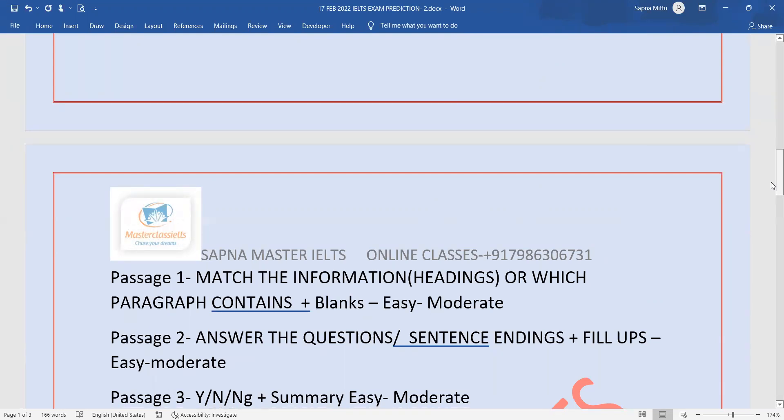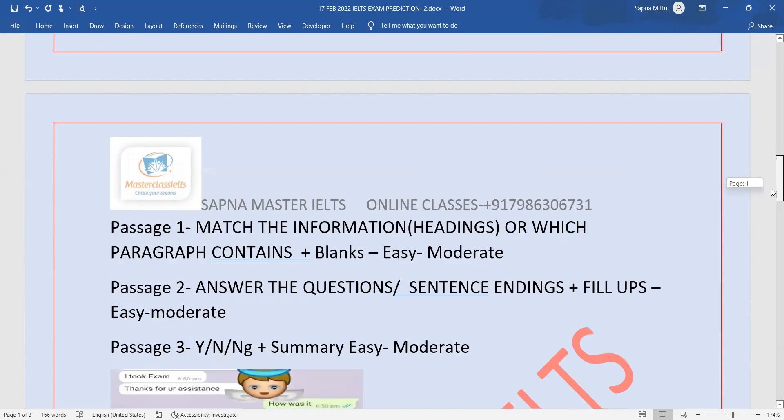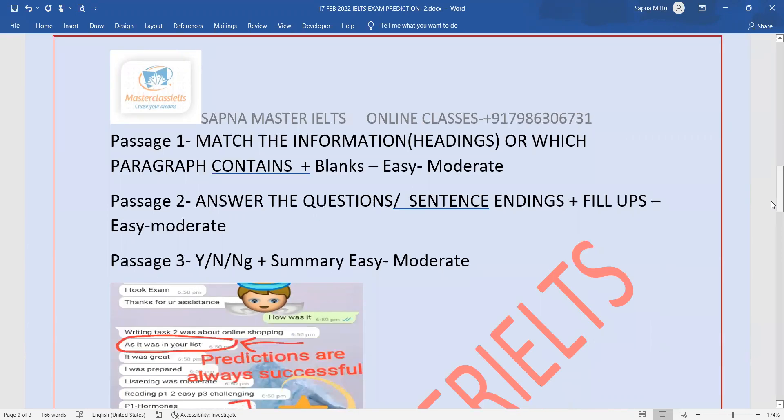Passage 2 will be answer the questions or sentence endings—fillups again—and easy to moderate. Passage 3: Yes/No/Not Given or True/False/Not Given chances, plus summary. That is easy to moderate. So overall the passage will be easy to moderate type.